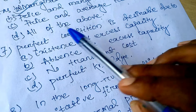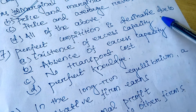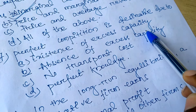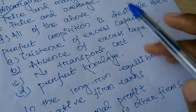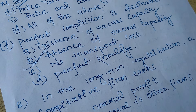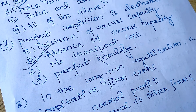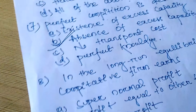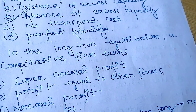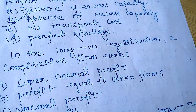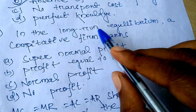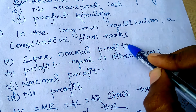Question seven: Perfect competition is desirable due to — existence of excess capacity, absence of excess capacity, no transportation cost, or perfect knowledge. The right option is option B, absence of excess capacity. In perfect competition, at the particular point of demand and supply, there is no excess capacity, no transportation cost, and perfect knowledge — that's why it is the ideal market.